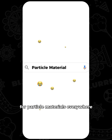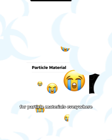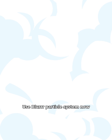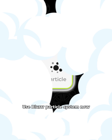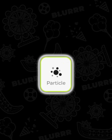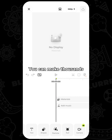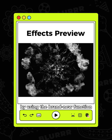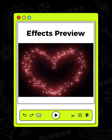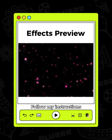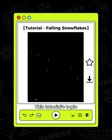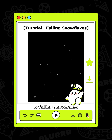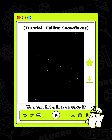Have you been searching for particle materials everywhere? Use Blur Particle System now! You can make thousands of particle effects by using the brand new function. Follow my instructions. This tutorial's topic is Falling Snowflakes. You can hit a like or save it for review later.